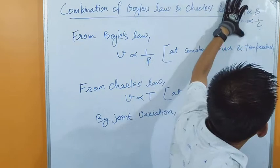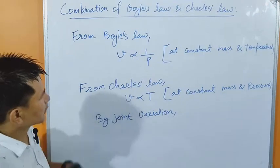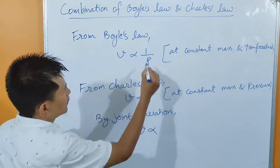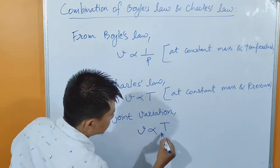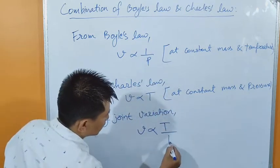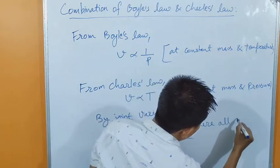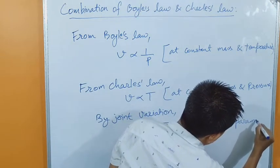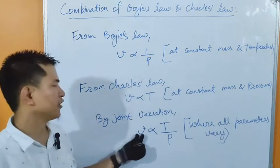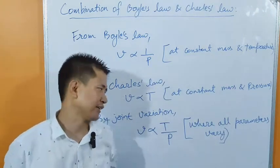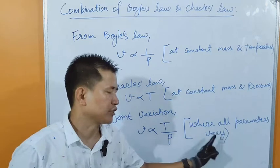In mathematics, we learn this rule in the chapter called variation. By joint variation, this V and this V can be written as one single V. Where T is in the numerator, T divided by P — in the denominator we have P. This means nothing is constant here — volume, temperature, and pressure. Nothing is constant, anything can change. Volume is proportional to T upon P, where all parameters vary.